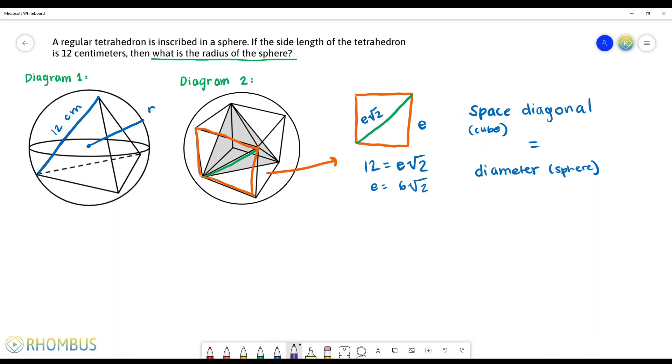So if we know that our E value is 6√2, we can plug it into the formula. So E times the square root of 3 is equal to 6 times the square root of 2 times the square root of 3. Now if we solve that, we get 6√6. That is the value of our space diagonal.